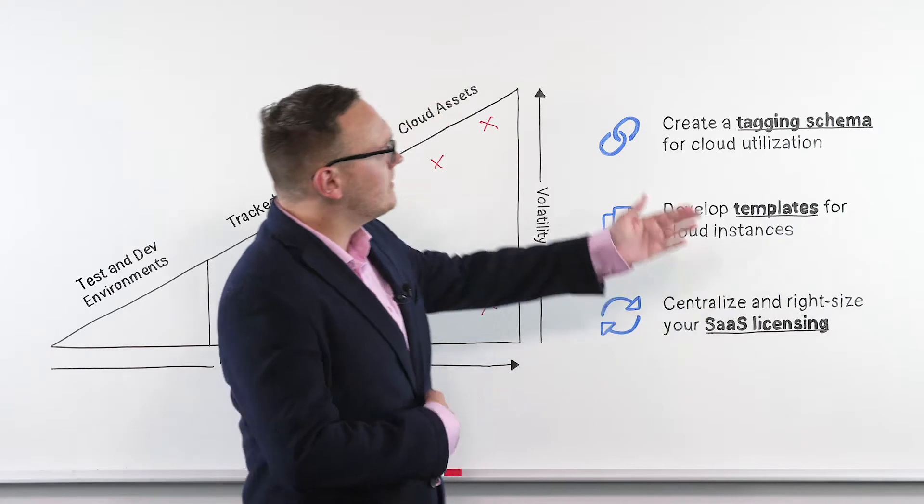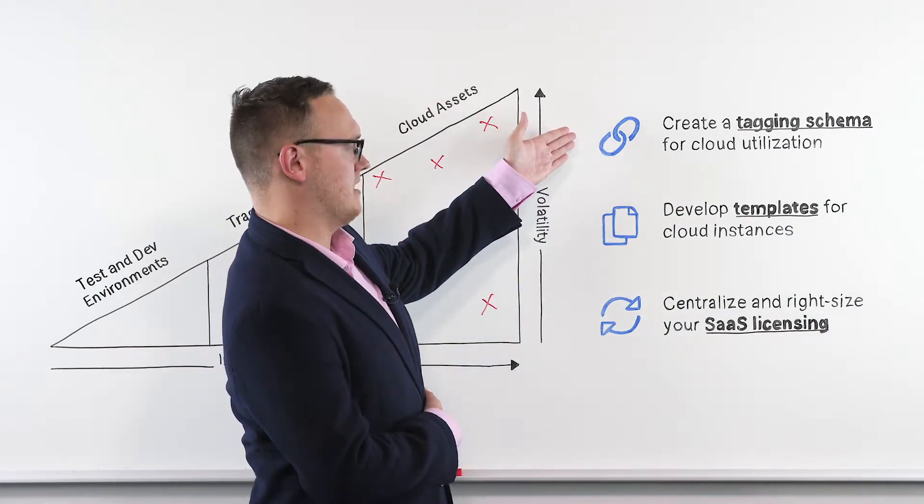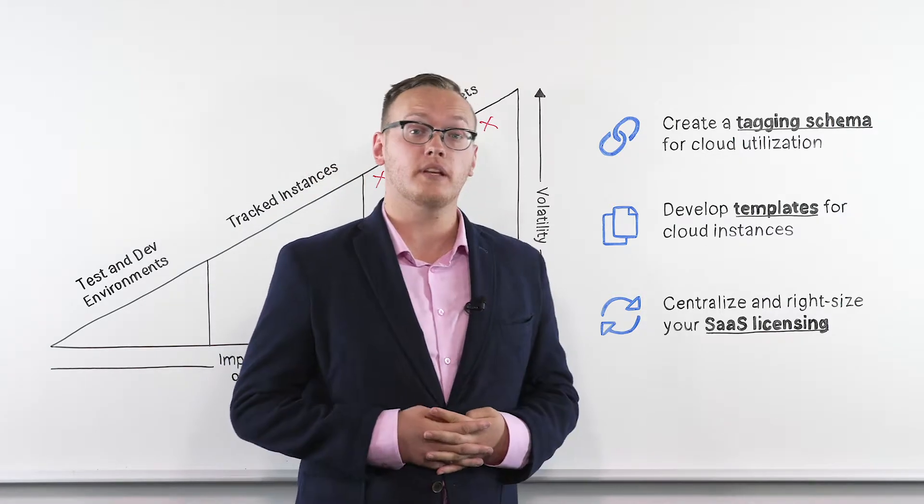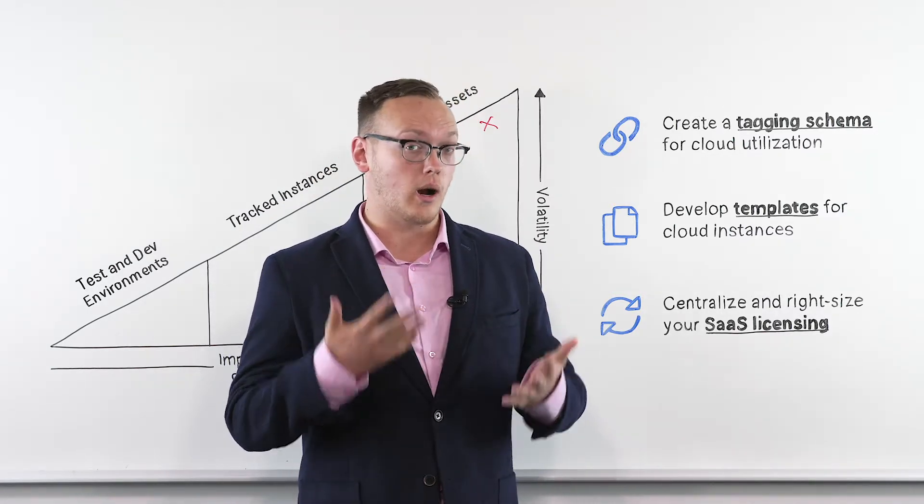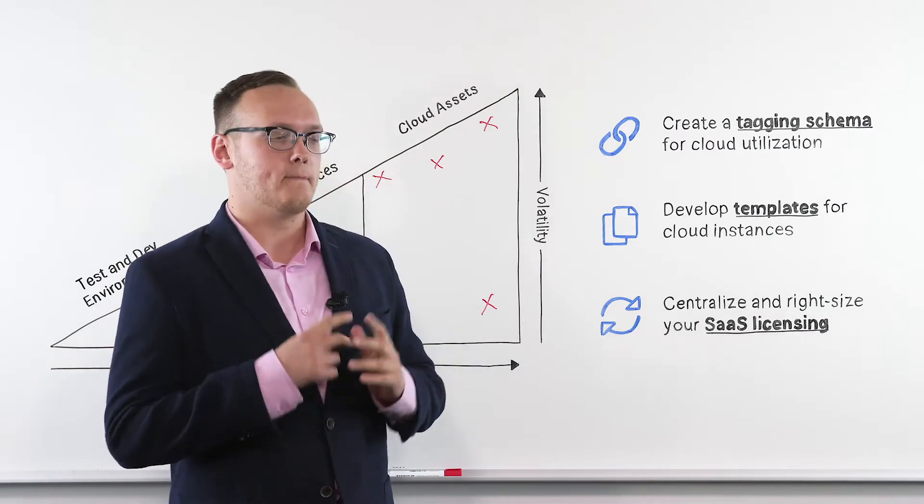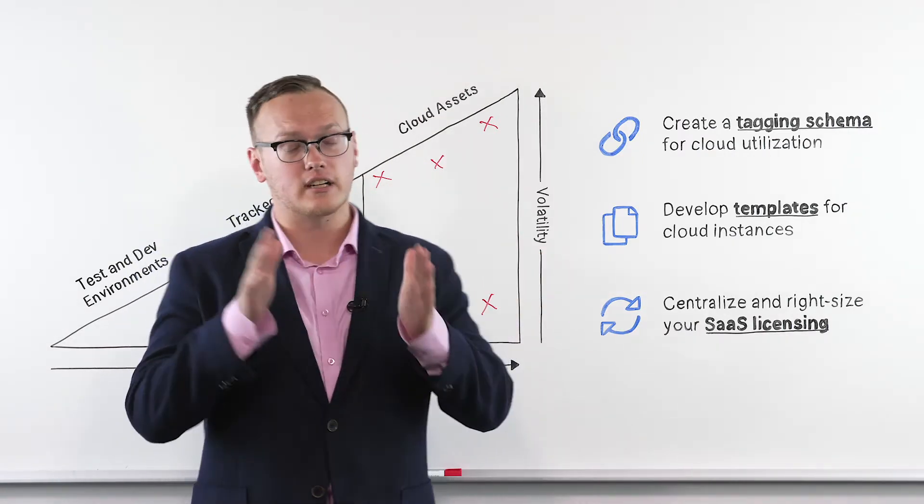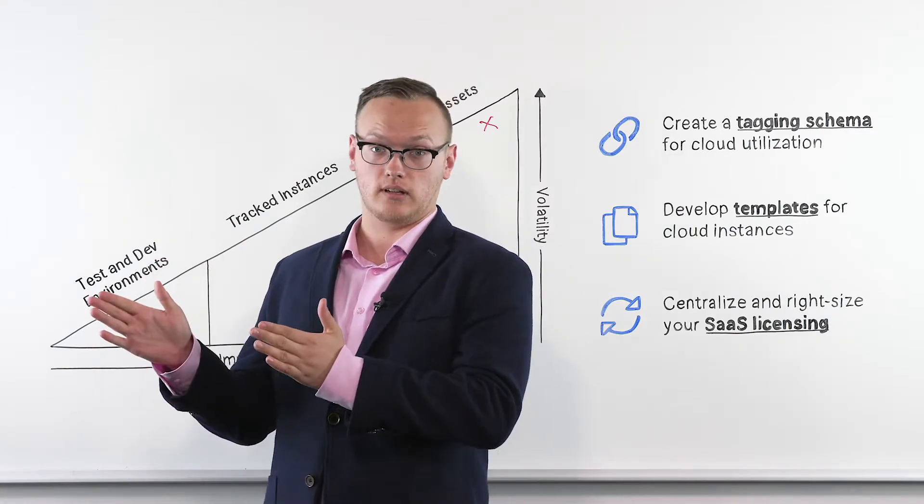The first item is to create a tagging schema for cloud utilization. This tagging schema will be used to make your bills more comprehensible and to ensure that you can more closely associate different costs with different cost centers and projects in the organization.